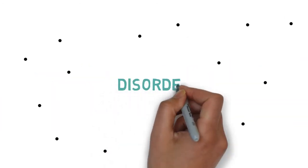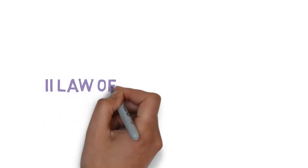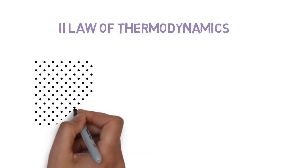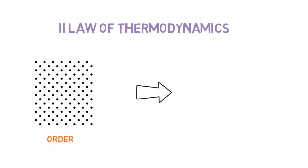What is entropy? Entropy is the measure of disorder. There's an important law of physics called the second law of thermodynamics which says that in a natural process a system will move from a state of order to a state of disorder.